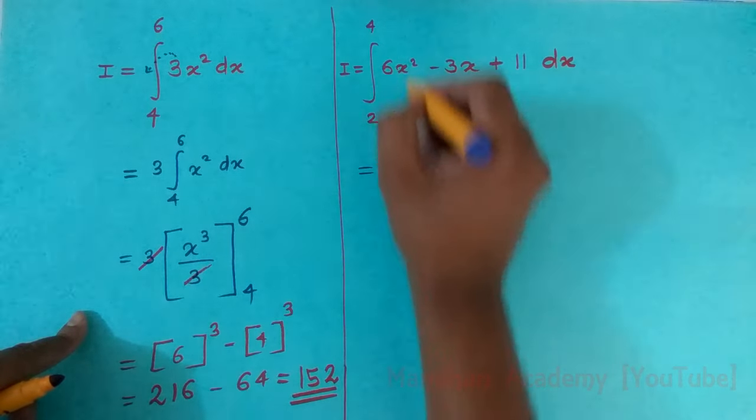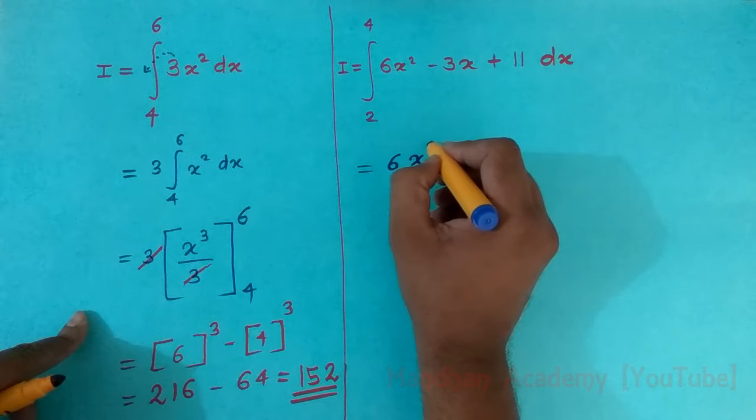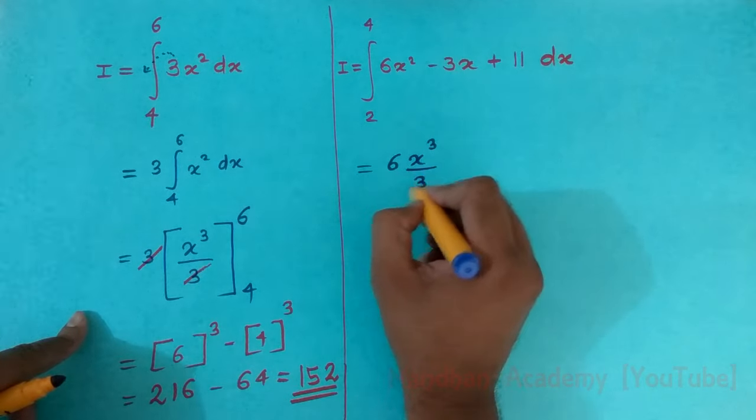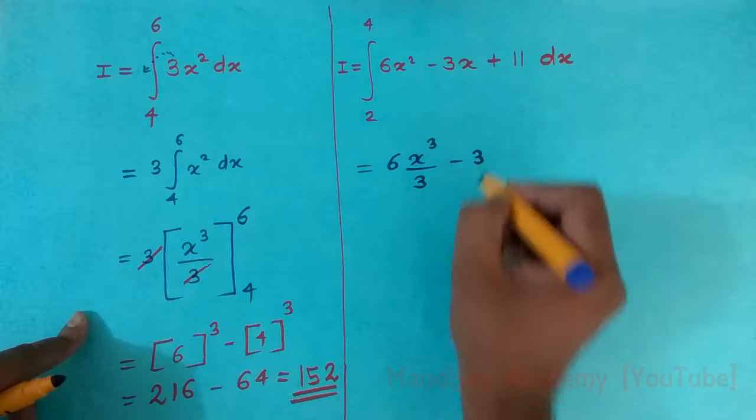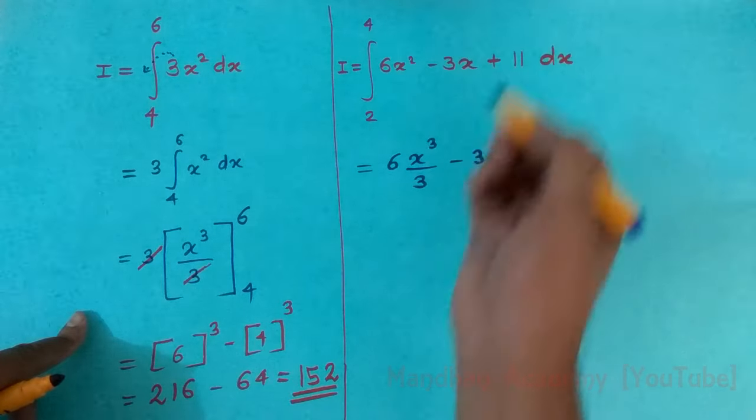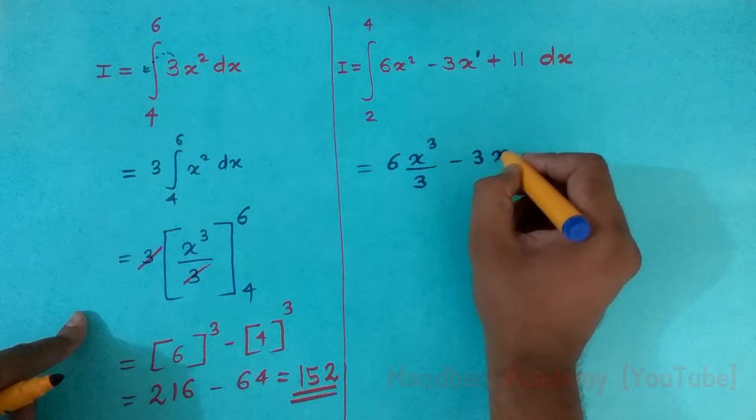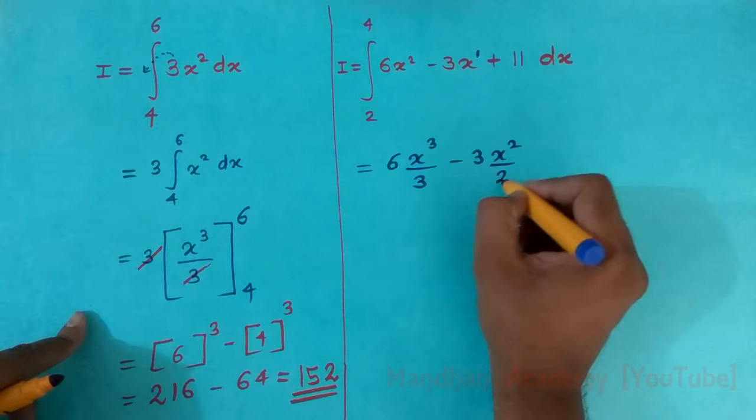6 outside x square integration would be x raise to 2 plus 1 upon 2 plus 1 according to formula. 3 outside integration of x. Can I say x is x raise to 1? So it would become x raise to 2 by 2.